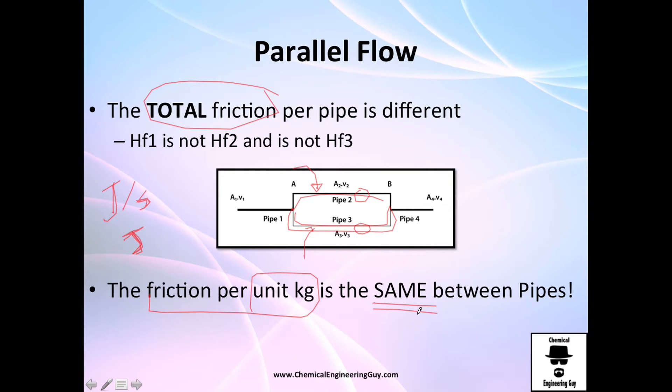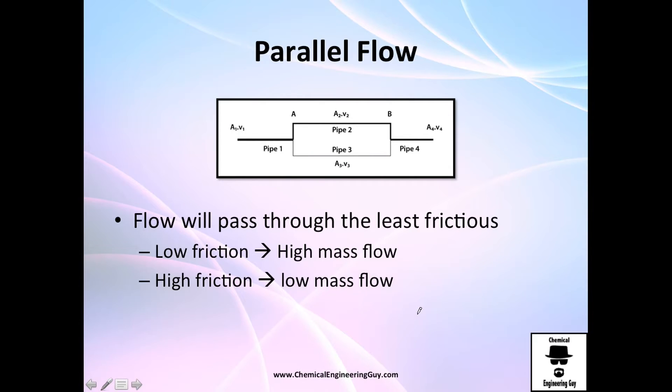Let me show you. If I'm losing 10 joules here with one kilogram passing, that's 10 joules per kilogram. And if I'm losing 100 joules here with 10 kilograms passing, that's also 10 joules per kilogram. The loss per unit mass is kept constant.